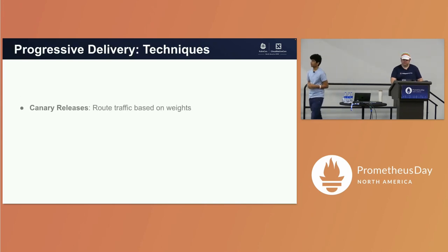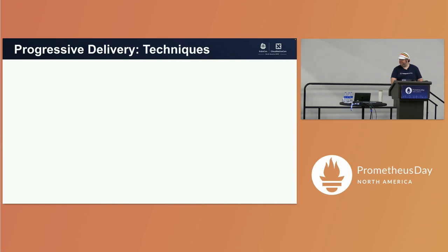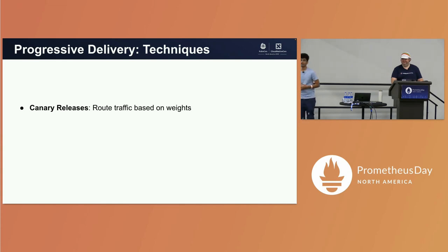There are three main ways you can do progressive delivery. The first is a canary release. A canary release works based on routing traffic to different services.